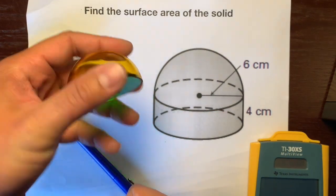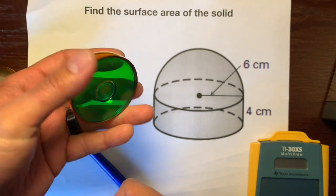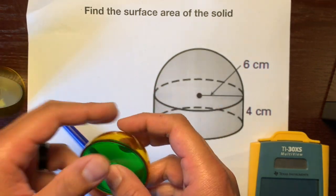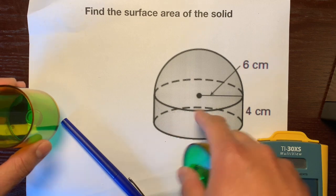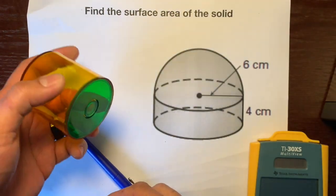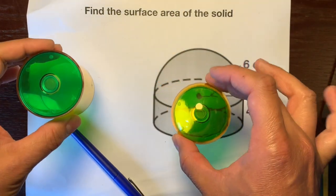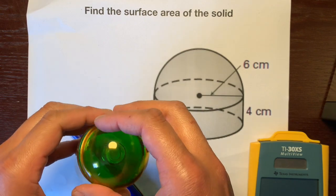which is a hemisphere, which is just a sphere cut into half, and a cylinder that sits on the bottom. We have this cylinder right here. We're going to be dealing with two formulas.